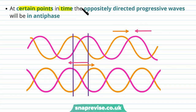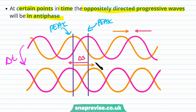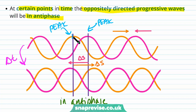At certain points in time the oppositely directed progressive waves will be in antiphase. After a certain time interval delta t, the pink wave has moved a distance delta s in one direction and the orange wave has moved delta s in the opposite direction, so the waves are now in antiphase — the peaks of one wave are aligned with the troughs of the other, and vice versa.